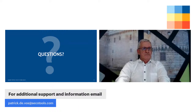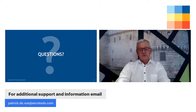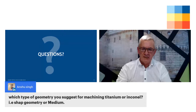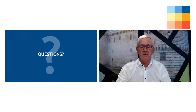A question: which type of geometry is suggested for titanium and Inconel? Both are roughly the same. I would go for a positive geometry — a sharp macro geometry but a strong micro geometry. The cutting edge itself deserves to be a little bit stronger, but the chip-breaking geometry should be positive and sharp.